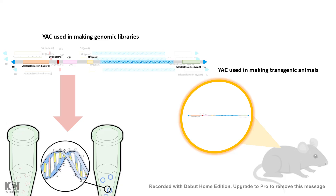However, alongside these advantages, there are several disadvantages as well. Yeast Artificial Chromosomes are very hard to handle and hard to propagate; their stability is an issue and they tend to get fragmented. Due to these issues, people stopped using YACs as a preferred vector and switched to Bacterial Artificial Chromosomes in order to have a higher carrying capacity vector.